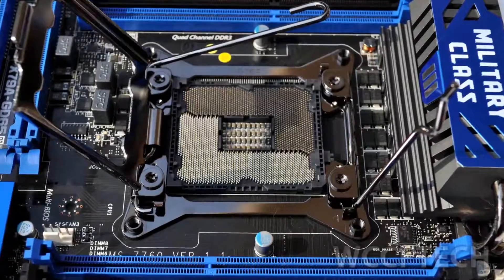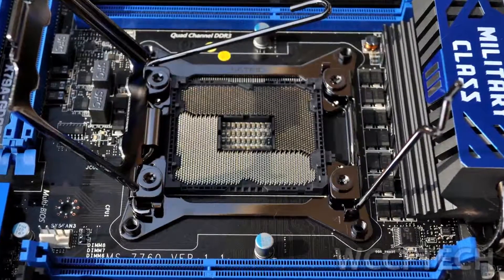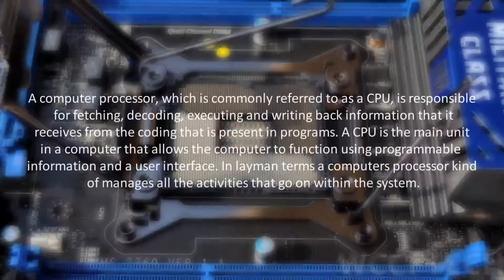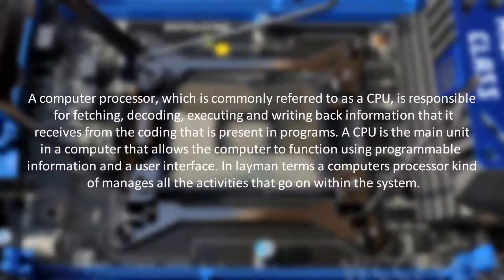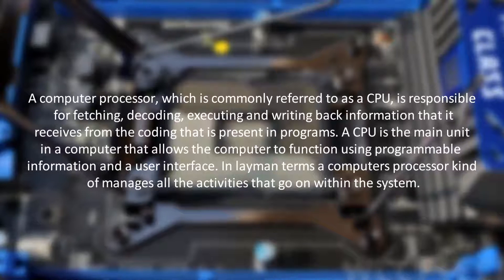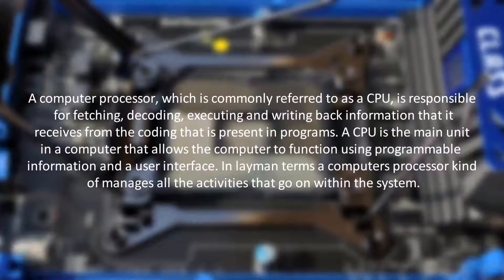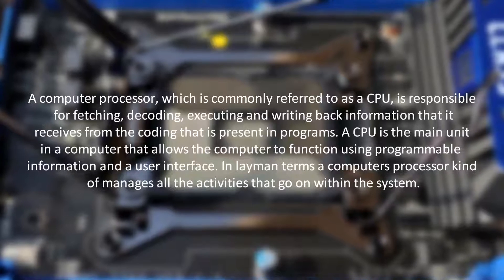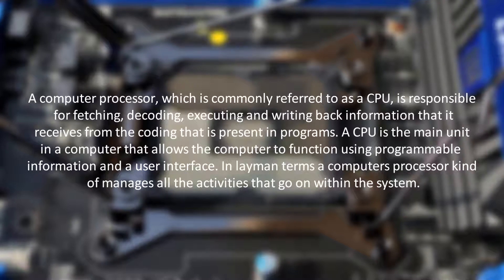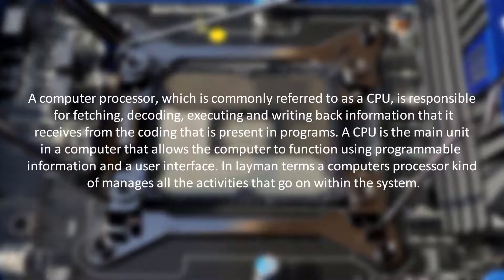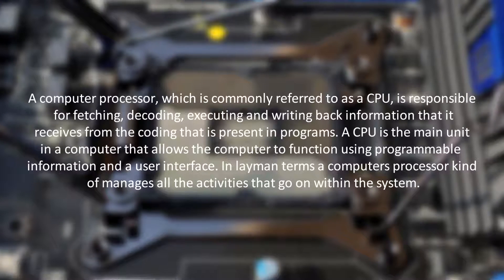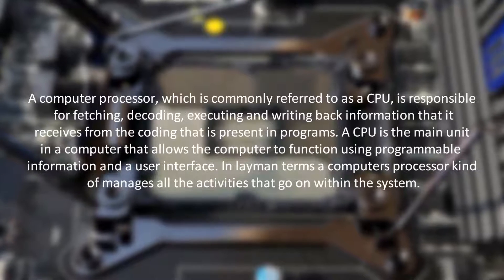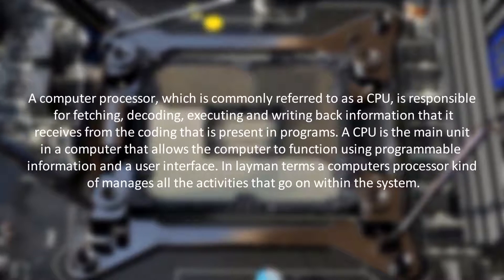So first off, I need to explain what i3, i5 and i7 are. More specifically, what does a processor do for your PC? A computer processor, commonly referred to as a CPU, is responsible for fetching, decoding, executing and writing back information that it receives from the coding present in programs. A CPU is the main unit in the computer that allows it to function using programmable information and a user interface. In layman terms, a computer's processor kind of manages all the activities that go on within the system.